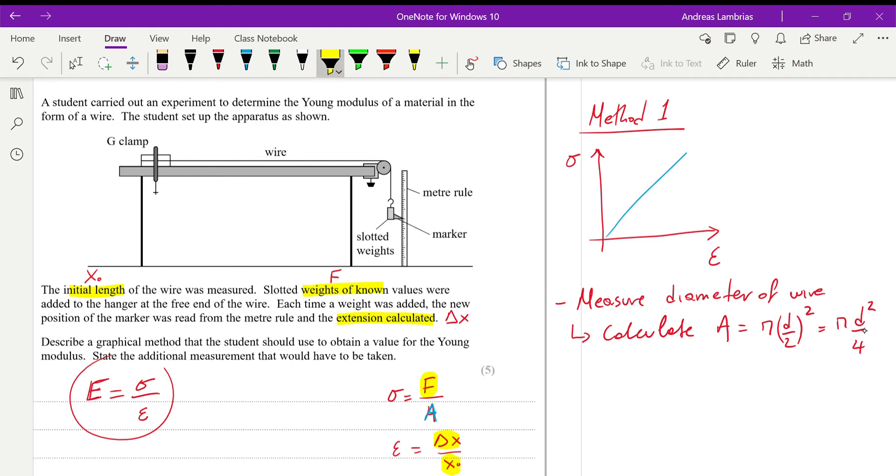And therefore, we will have all the information we need to then calculate the stress, force divided by area. So, calculate stress, sigma, and then we need to calculate the strain, e. So, these values will be for every time we add a new weight, then we get a different stress, different strain.